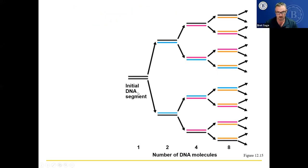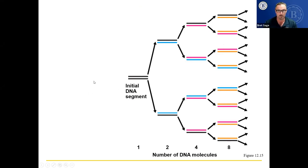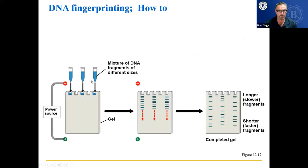Here's how PCR works: you start with the initial DNA segment, separate it into two pieces, bring in the complementary bases, and continue to do that over and over again. Pretty soon you have lots and lots of identical copies of the original DNA.